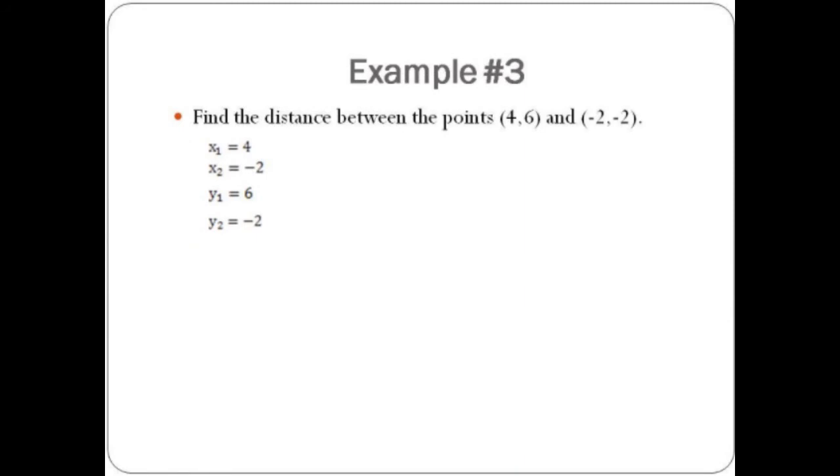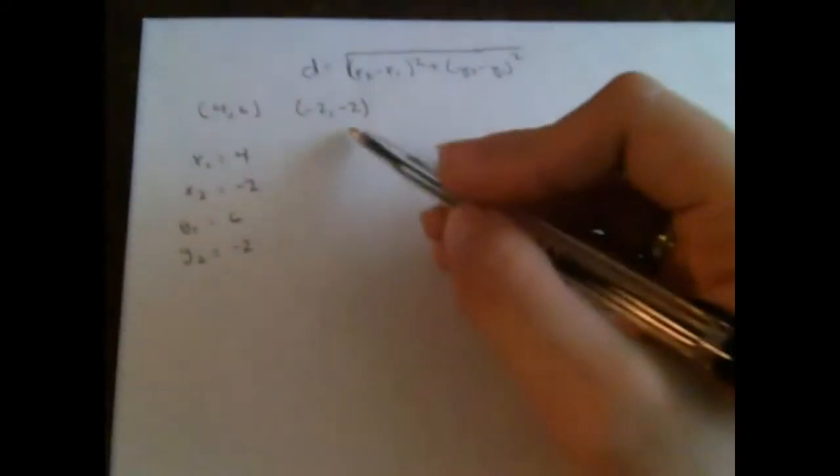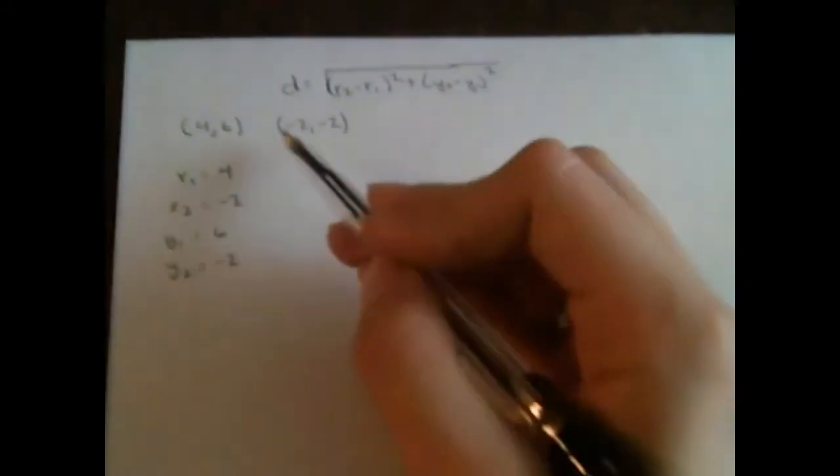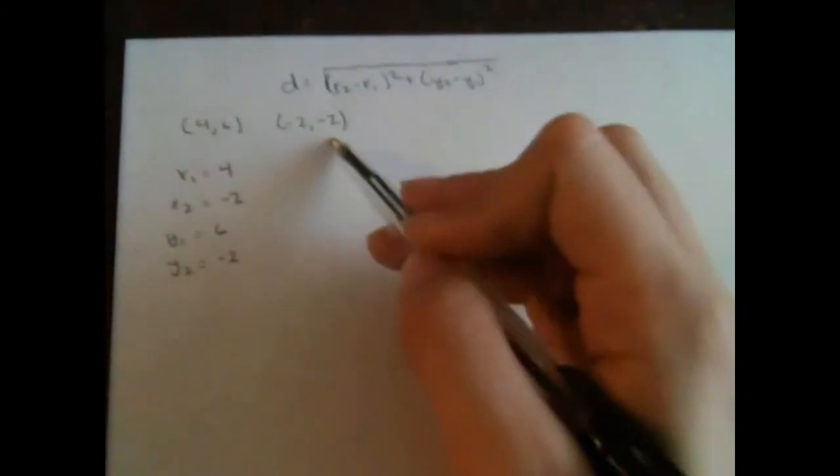Let's work this example. So here we have the distance formula, and here we have the points from the given problem. We know that x1 is 4, x2 is negative 2, y1 is 6, and y2 is negative 2. So now all we have to do is plug it into the distance formula.